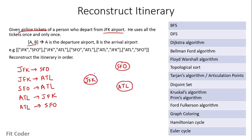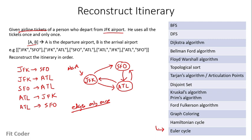Drawing this as a graph: he goes from JFK to SFO, there is an edge from JFK to ATL, from SFO to ATL, then ATL to JFK, and ATL to SFO. Starting from JFK, we have to visit each of these edges only once. This is an example of the Euler path, because in the Euler path we visit each edge exactly once.